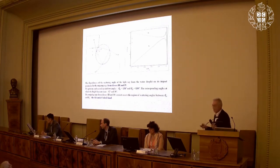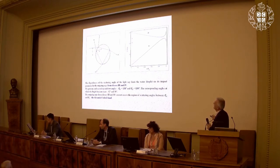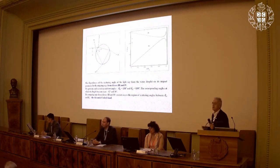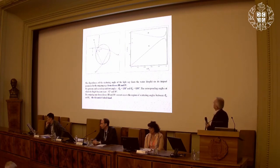This is called the deflection function. It gives you the scattering angle of the light ray as a function of the impact parameter. For rays of class 3, there is a minimum, and for rays of class 4, a maximum. Each of these points is a point of accumulation of light — that was the discovery. The corresponding scattering angles are 138 degrees and 130 degrees, and the angles relative to the horizon are 42 degrees and 50 degrees — these are the primary and secondary rainbows.